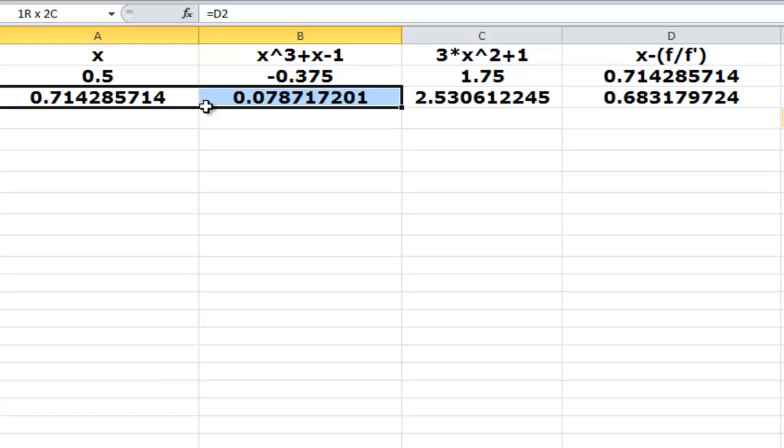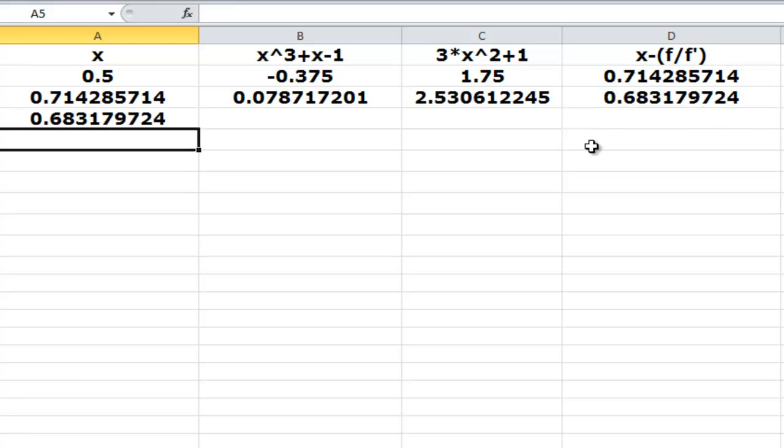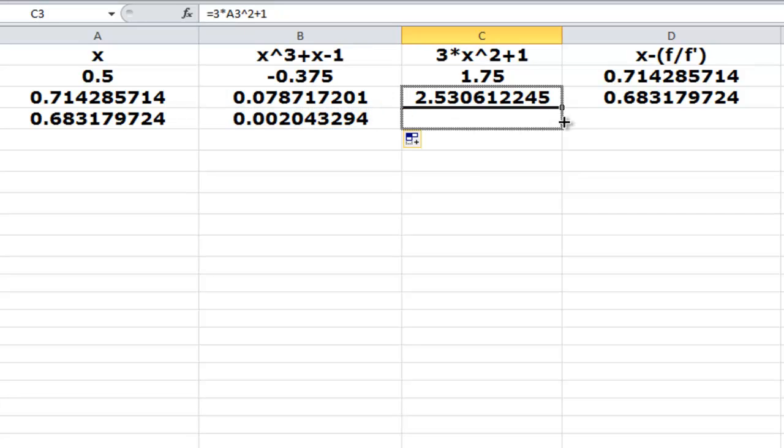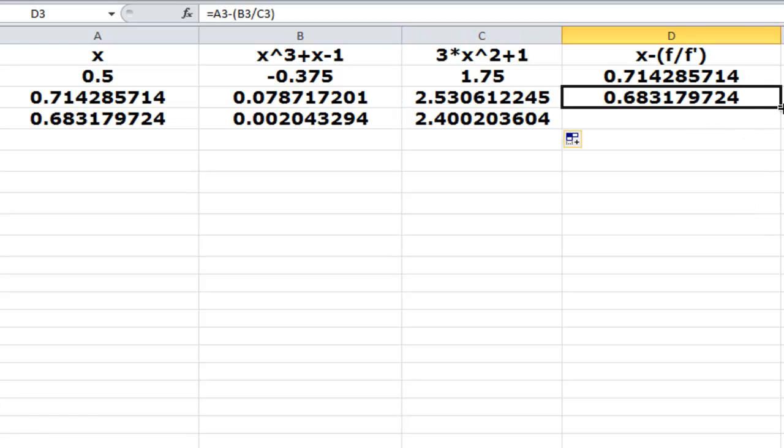Now what we can do is we can take this second row. So let's just do one more, just for illustration purpose. Then we got this here. And as before, we copied and pasted so that we have the iterations going along.